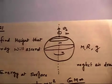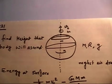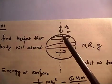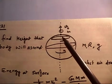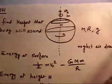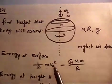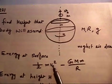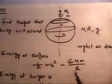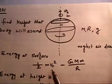At the surface of Earth, the total energy has two parts: kinetic energy = (1/2)mv0² and potential energy = -GMm/R. So the total energy at the surface is (1/2)mv0² - GMm/R.